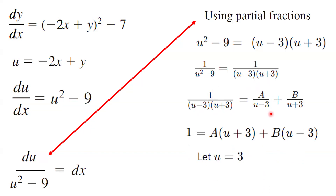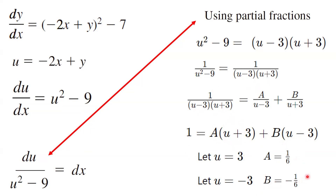Taking the common denominator gives 1 equal to A times u plus 3 plus B times u minus 3. If you take u equal to 3, you get A times 6 equals 1, so A is 1/6. If you take u equal to negative 3, you get B times negative 6 equals 1, so B is equal to negative 1/6. We have now found both coefficients A and B.